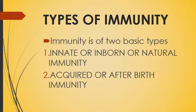Types of immunity. Immunity is of two basic types. Number one is innate or inborn or natural immunity. Number two is acquired or after-birth immunity. We will discuss both immunities in detail, starting with innate or inborn or natural immunity.